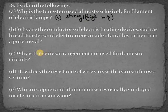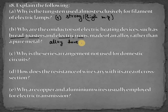Now the second part says why are the conductors of electrical heating devices such as bread toasters and electric irons made of an alloy rather than a pure metal? Now the pure metal is not used. The alloy has been used because alloys have high resistivity.